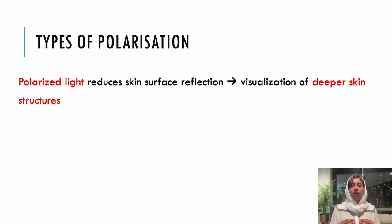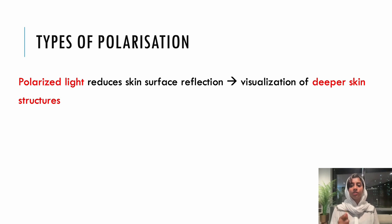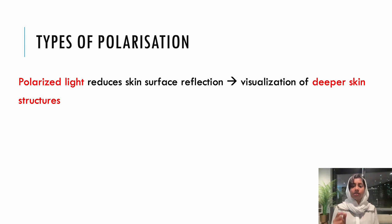Another important concept is the type of polarization. There are two different modes in the dermoscope: one is polarized mode and the other is non-polarized mode. Whenever we observe a lesion, we need to know which mode to use. Polarized light helps us to visualize structures that are deeper in the skin, whereas non-polarized light helps us to observe more superficial structures, such as a wart or a milia. Polarized light helps us to observe structures like BCC or Dermatofibroma, which have evolved from deeper layers.